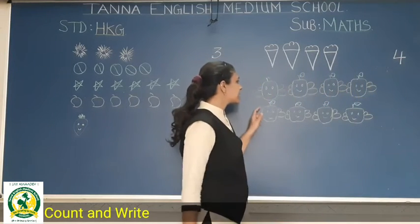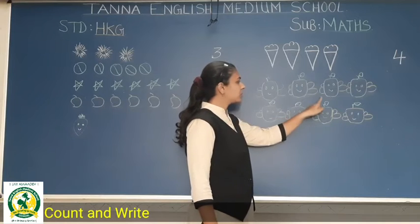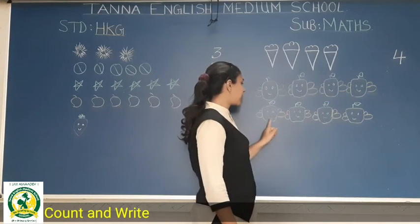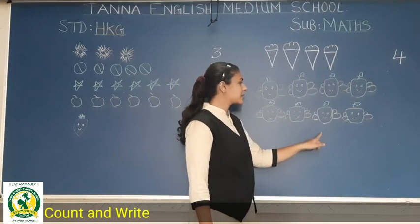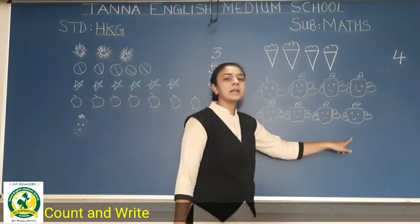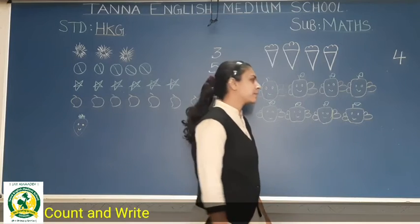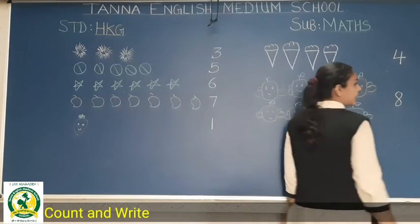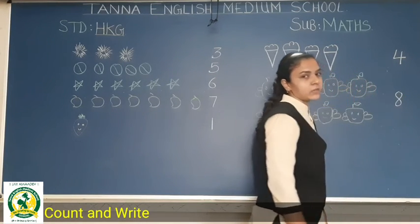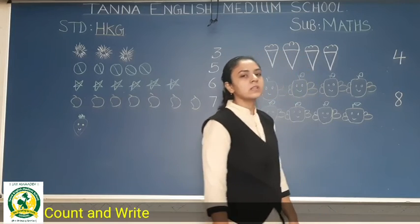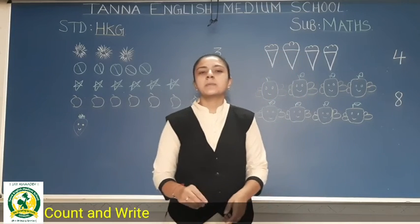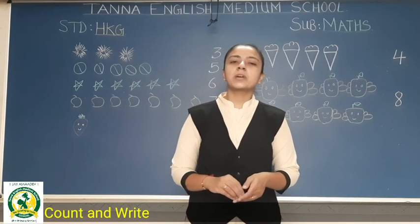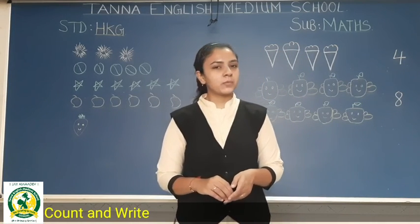Next. One, two, three, four, five, six, seven, eight. Eight. So here we will write eight. Okay students, so this page will be complete if you have done CW and HW.